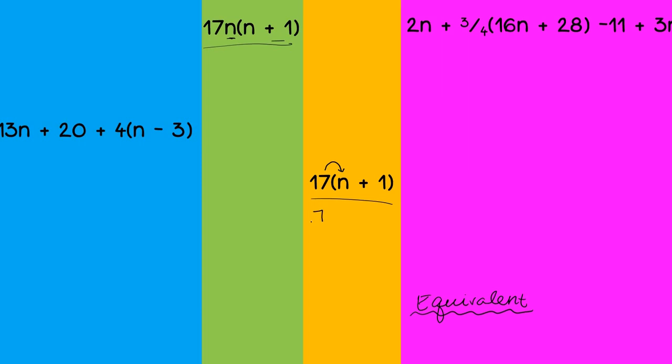So here, I have 17 times n plus 17 times 1. That's going to give me 17n plus 17.